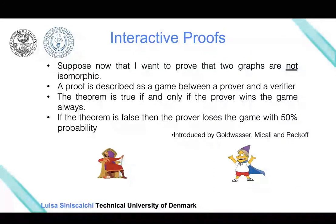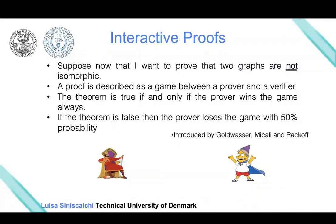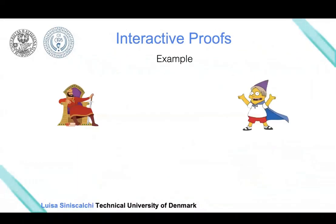Before giving the interactive proof for graph non-isomorphism, let me give a simpler example of what an interactive proof is. The prover is not color-blind and wants to prove to the verifier that he can actually see all the colors. So they can run an interactive proof between the prover and the verifier.